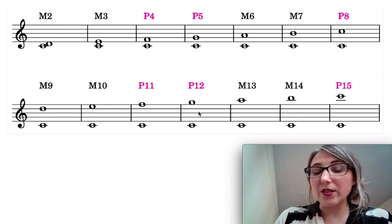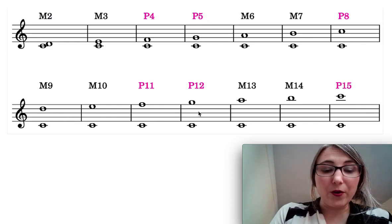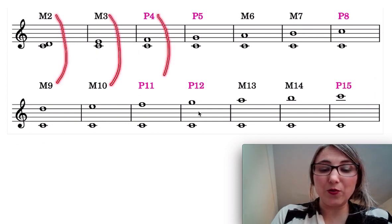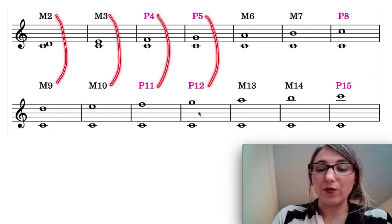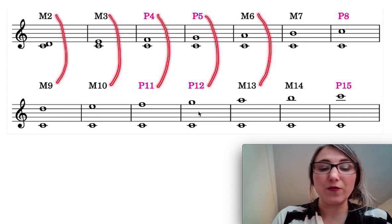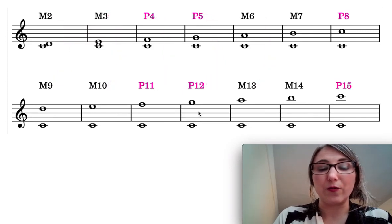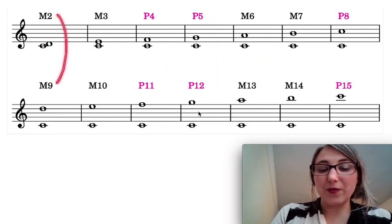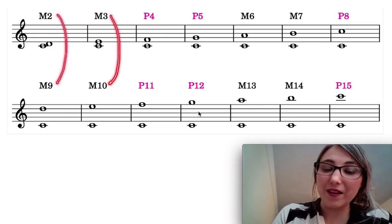Another thing you might notice when we've got them all laid out like this is that for each of the simple intervals and the compound intervals the relationship between the numbers, the size of the interval is 7. So if I add 7 to any of the simple versions I end up with the compound version. So 2 plus 7 is 9, 3 plus 7 is 10 and so forth, right?